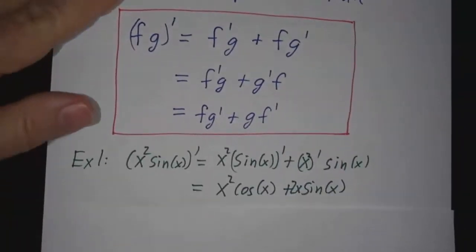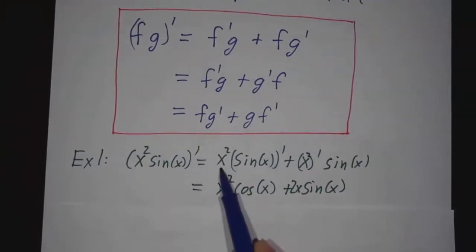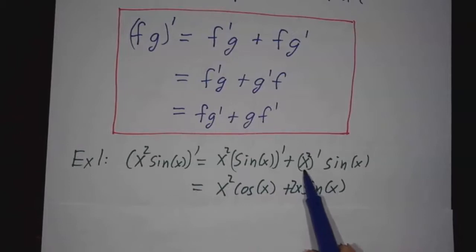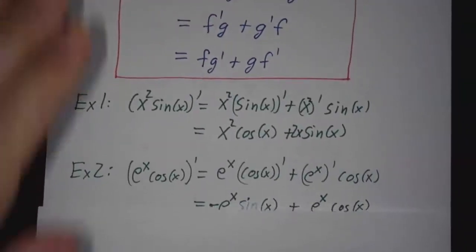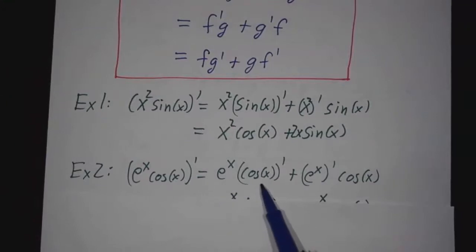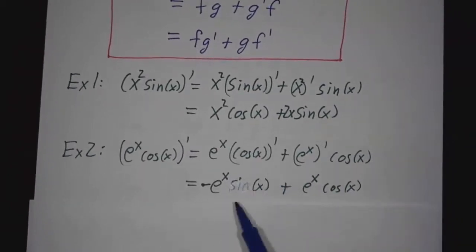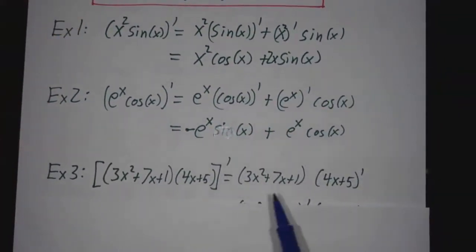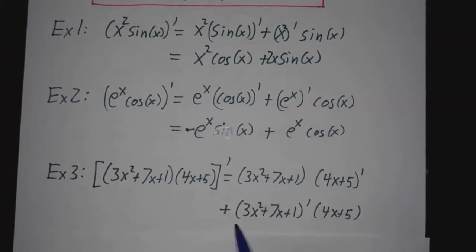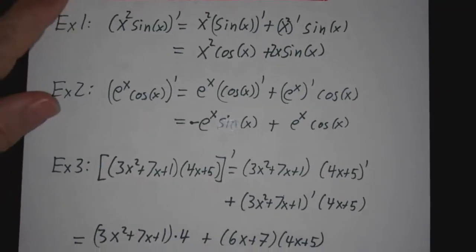Let's work some examples. The derivative of x squared times sine of x is x squared times the derivative of sine of x, plus the derivative of x squared times sine of x. The derivative of sine of x is cosine, so we get x squared cosine x plus 2x sine x. For e to the x times cosine of x, the derivative is e to the x times the derivative of cosine, plus the derivative of e to the x times cosine. The derivative of cosine is minus sine, and the derivative of e to the x is e to the x. For products of two polynomials: the first times the derivative of the second, plus the derivative of the first times the second, and then work out the algebra.